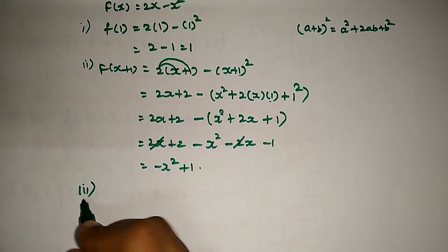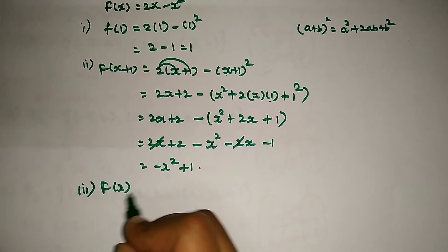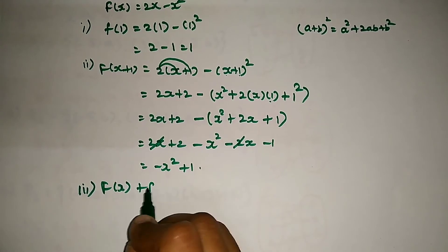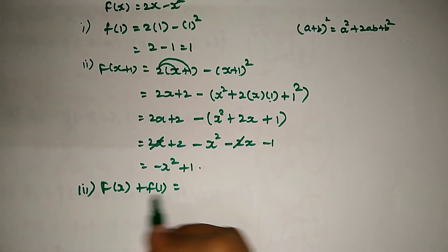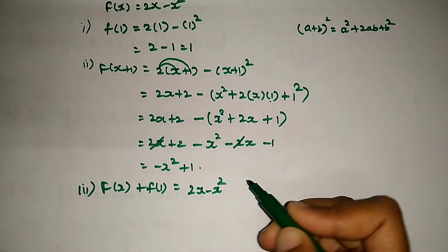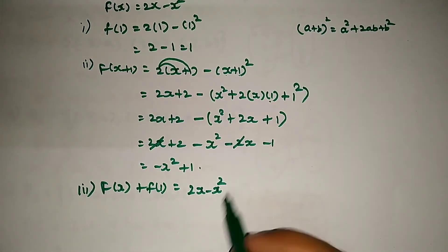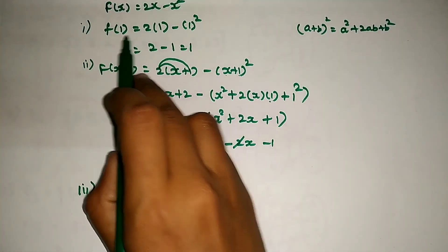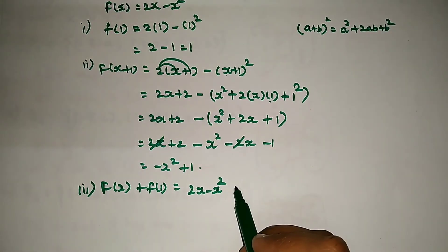The third part is f of x plus f of 1. f of x is 2x minus x squared. And we already found that f of 1 is equal to 1.